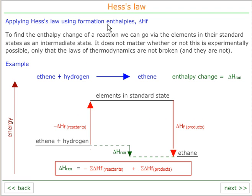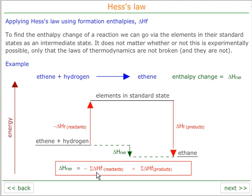If we want to use formation enthalpies, what we're doing is going from the reactants to the products — in this case ethene plus hydrogen to ethane. Going from ethene plus hydrogen to the elements in standard states is the negative of the enthalpy of formation, because elements in standard states back to these compounds would be the enthalpy of formation. So we're going against the enthalpy of formation, meaning it must be negative. Then from the elements in standard states to the products is the enthalpy of formation. So to get the enthalpy of reaction, it's negative enthalpy of formation of reactants plus enthalpy of formation of products.